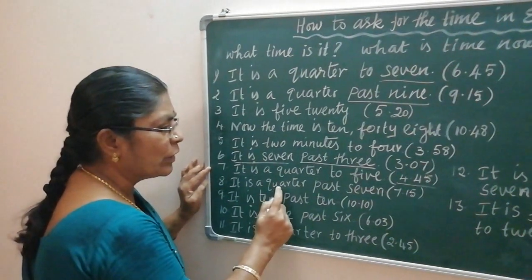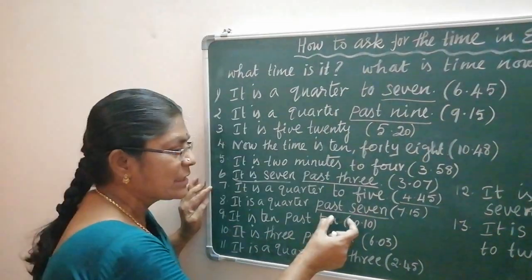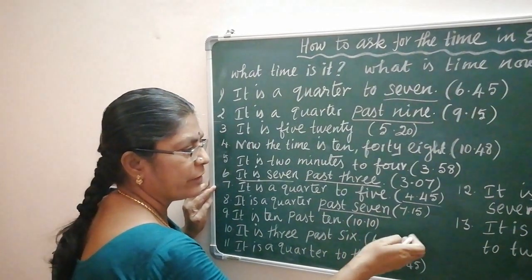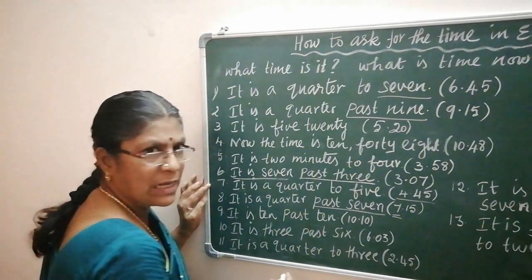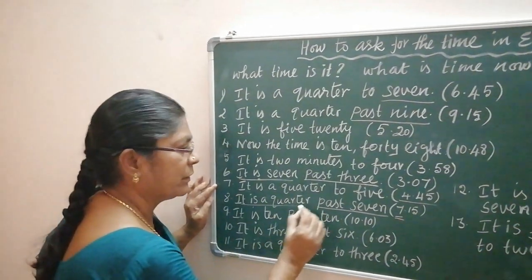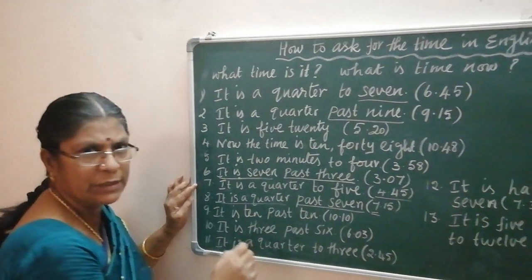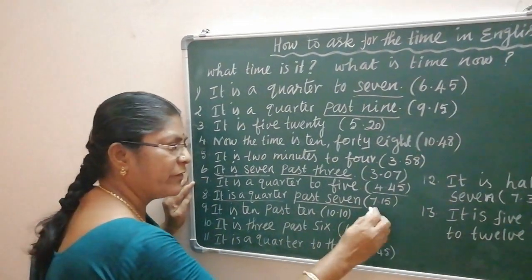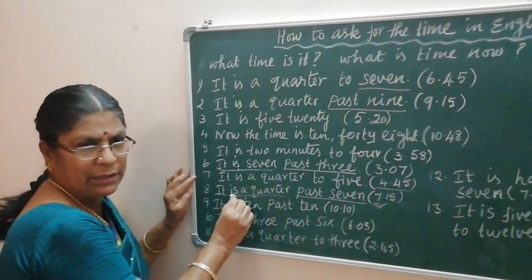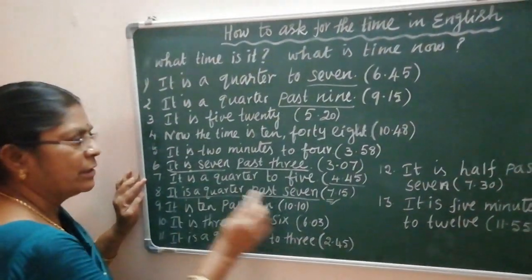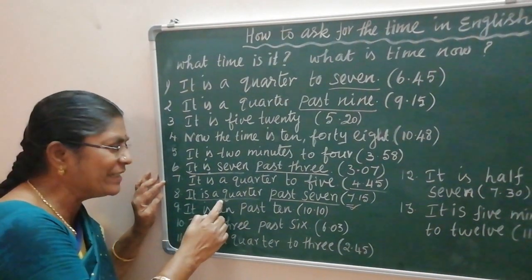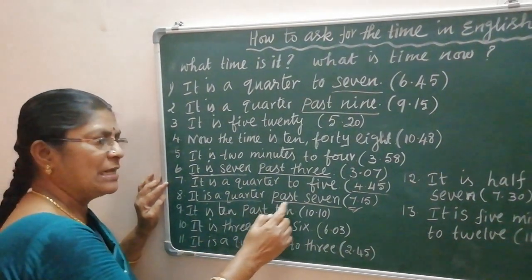It is quarter past seven. Seven hours are past — that means seven is crossed. It is quarter, so you have to reach quarter past seven. Quarter means 15, so the time is 7:15. You have to say: it is quarter past seven.